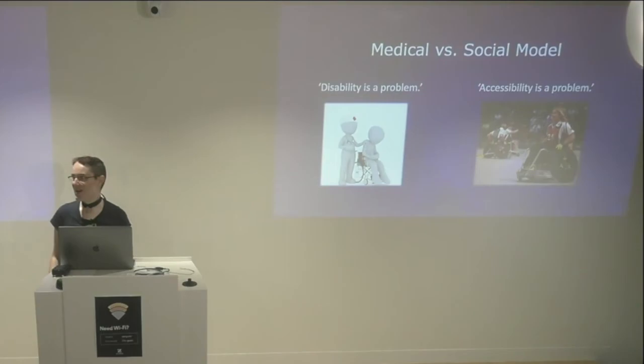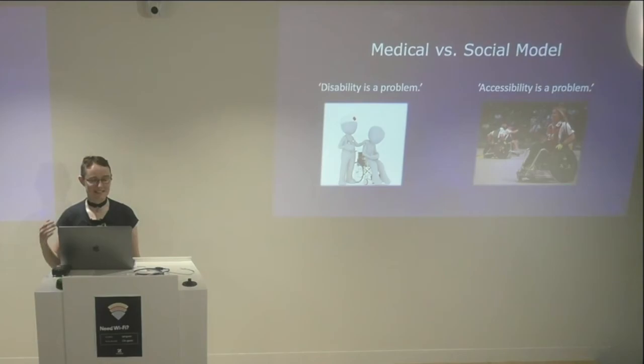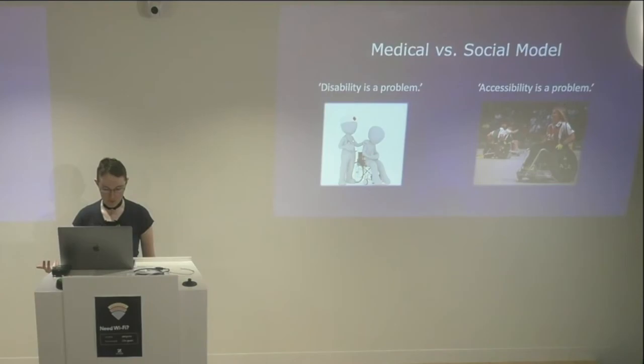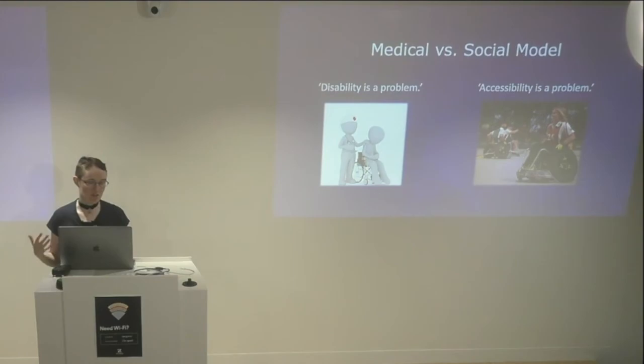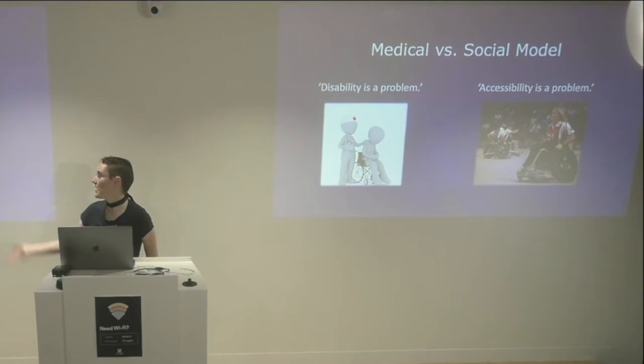Now, this is where we get political for a minute. There are briefly two ways that you can consider disability: the medical model and the social model. The medical model effectively holds that disability is a problem — it's something to be cured, something to be solved. As you can see, we've got our doctor there comforting the patient in a wheelchair. On the other hand, the social model holds that it's not actually disability that's the problem — it's the fact that our society is not really designed for disabled people, so it's not disability that's the problem but accessibility.